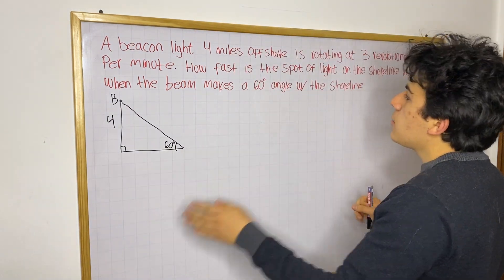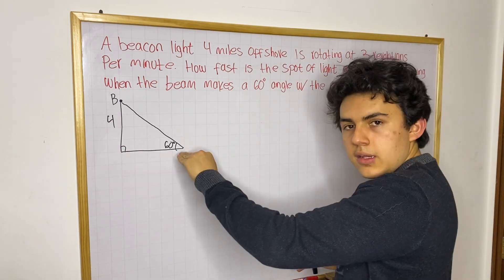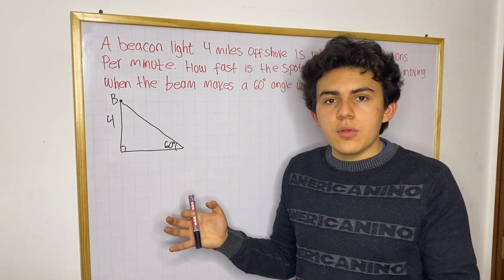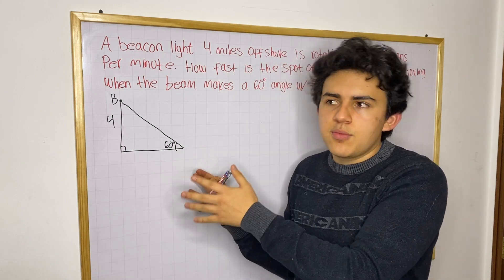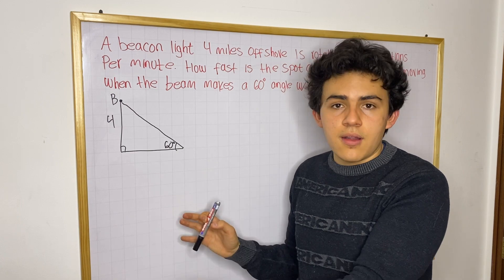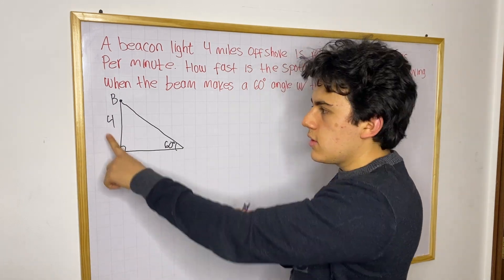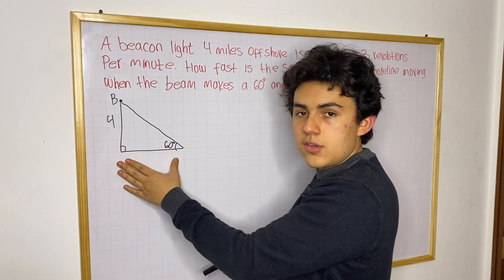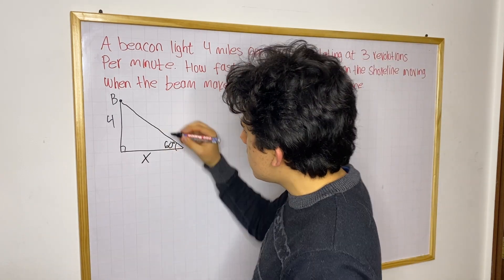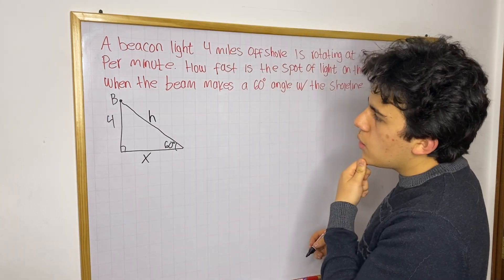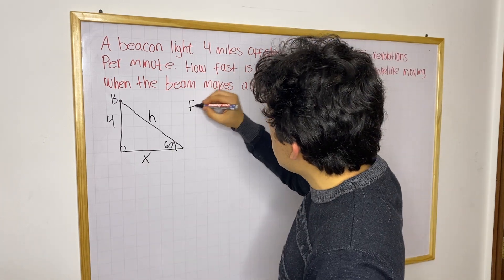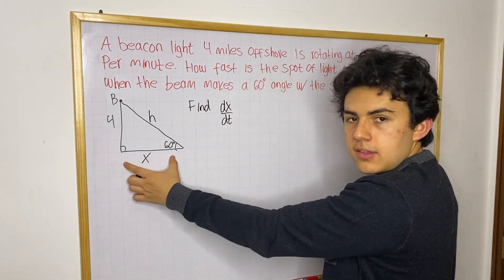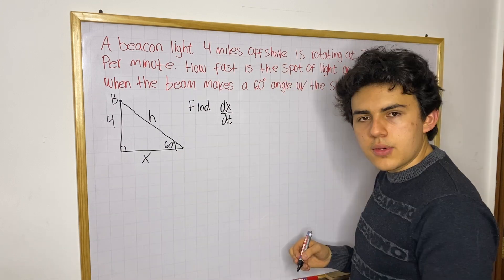So now this is what we have, and we need to figure out how fast this spot of light is moving on the shoreline — that is, how fast this horizontal distance is changing. Remember, one of the most important principles of related rates problems is that you only assign letters to things that are moving. So in this case, four is going to be constant. The distance from the shoreline to the beacon will not change, so we don't give this side any letters. We know this hypotenuse will change, and we also know this horizontal distance will change. So I'm going to say this distance is x, and I'm going to call this hypotenuse h.